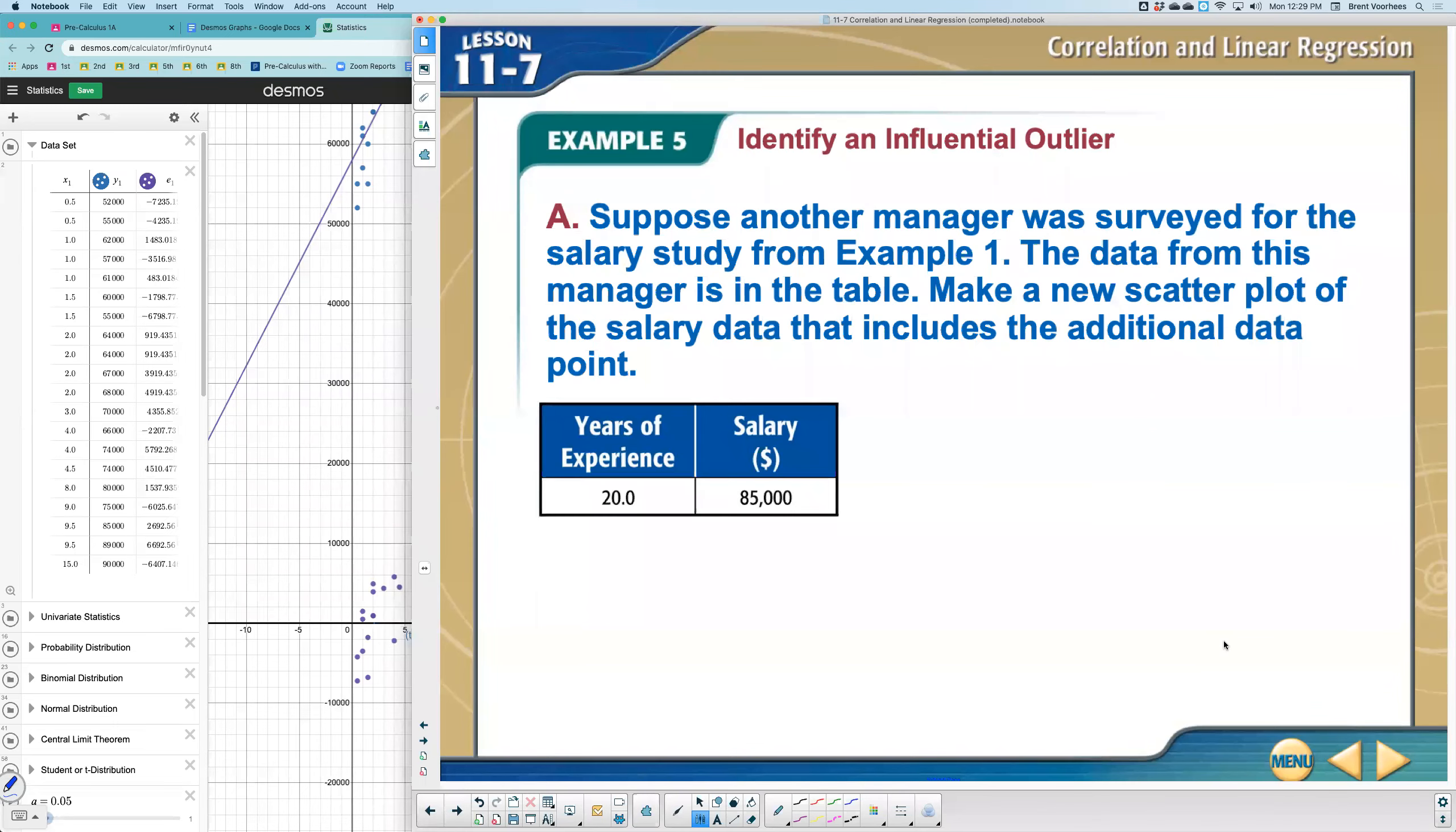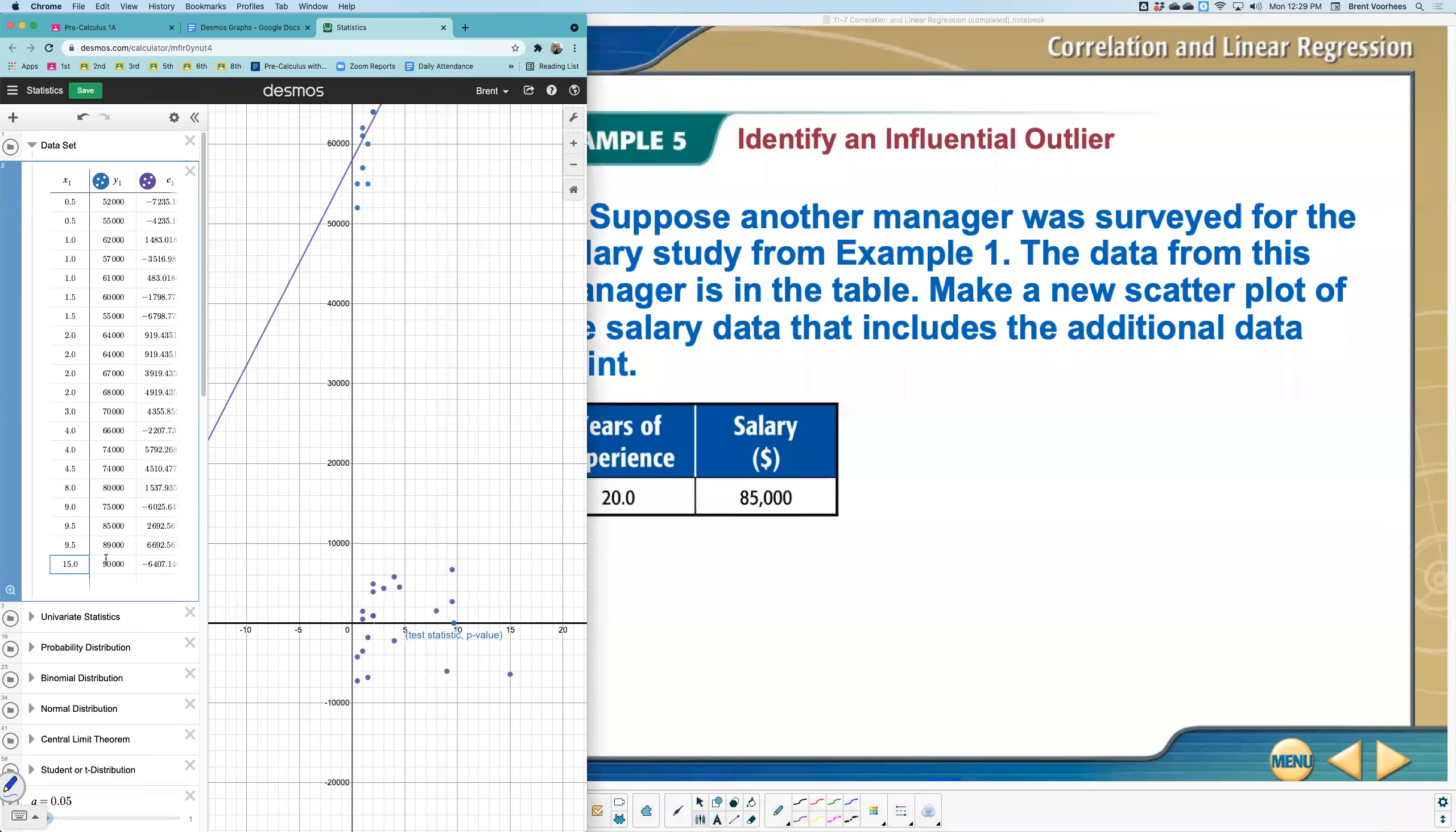All right, example five. It says suppose another manager was surveyed for the salary study from example one. Data from this manager is in the table. Make a new scatter plot of the salary data that includes the additional point. So we need to add a point here.